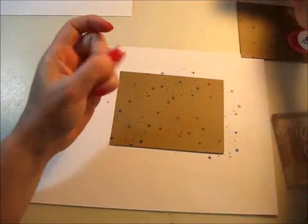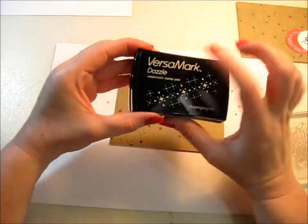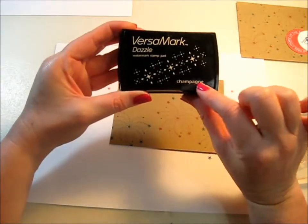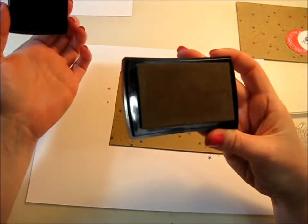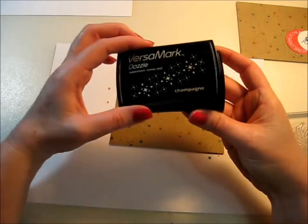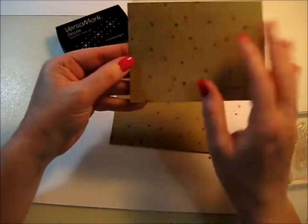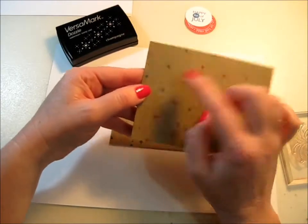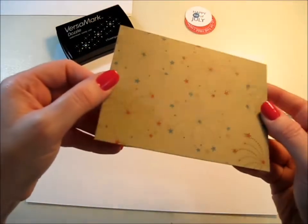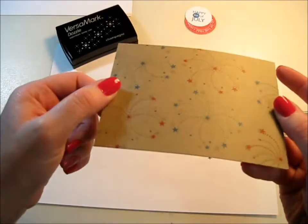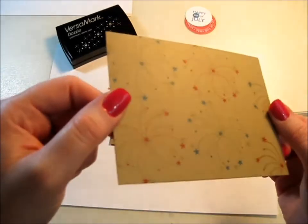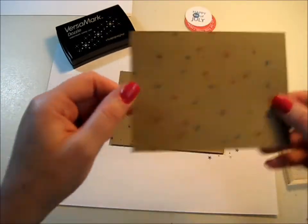Now, to give it a little bit more depth and dimension, I went over it with Versamark Dazzle in Champagne. And this just, I don't really know if you can see it on here. It just gives it a little bit of dimension. Can you see that? It's like a watermark, but it's got glitter in it. And I don't really know if it's showing up that well for you. But it's so pretty.